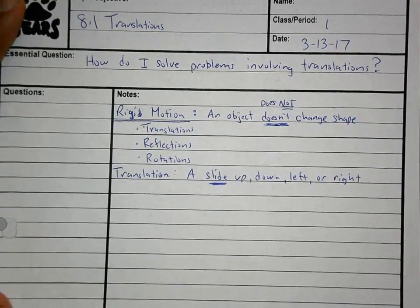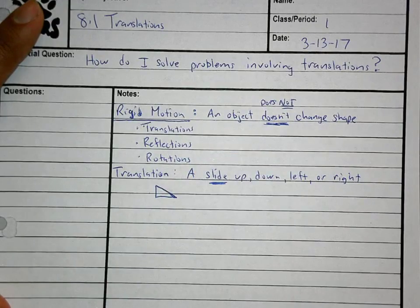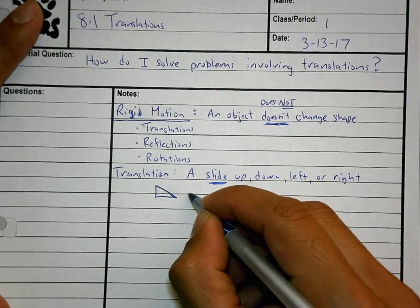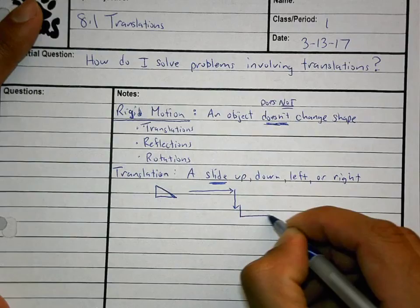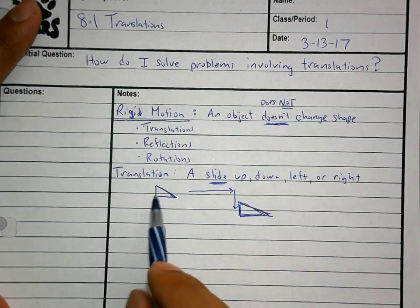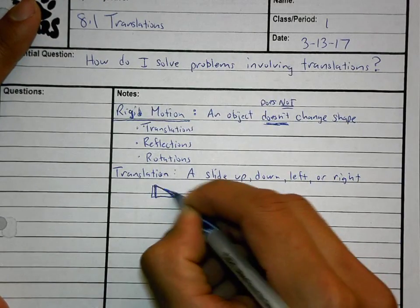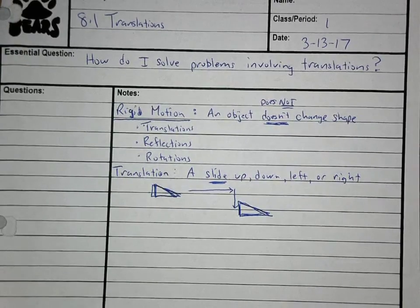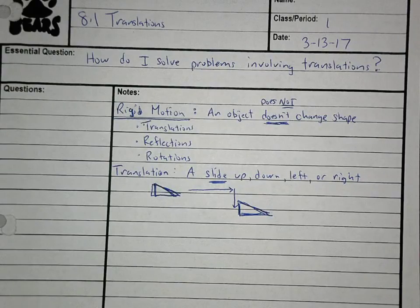For example, if I had an object that looked like this and it moved this way, then that way, it would still be pointing the same direction. It's supposed to be the same size and shape. That's a translation. A translation is a slide — either up, down, left, or right — and it can do any combinations of those directions.